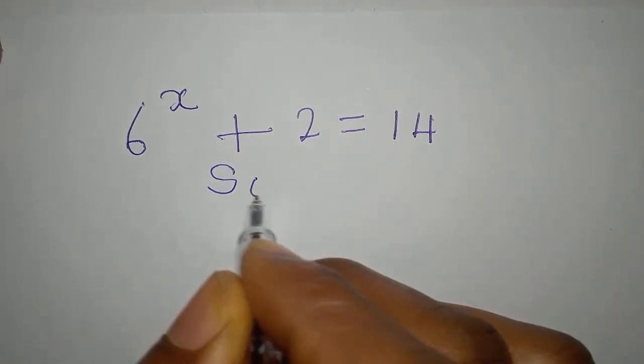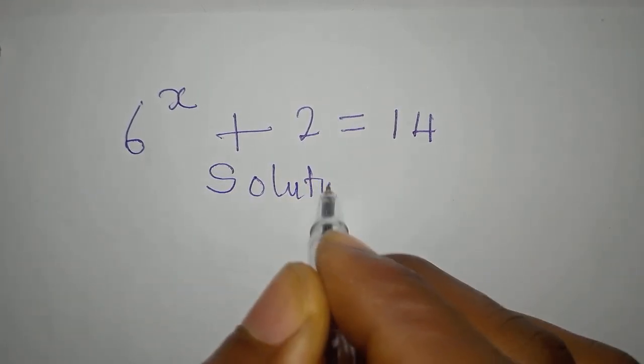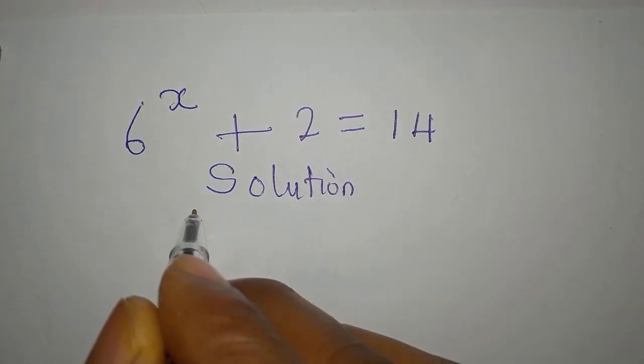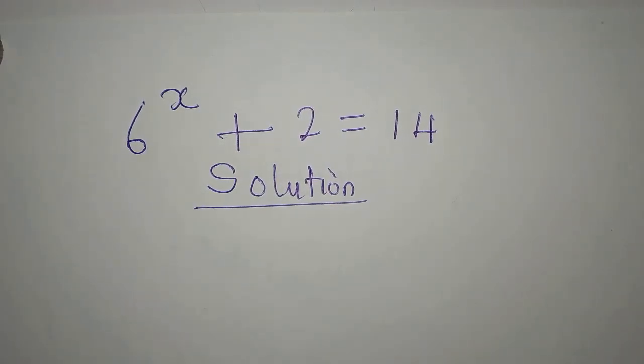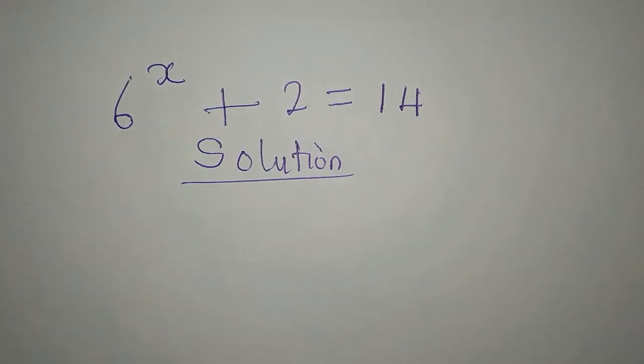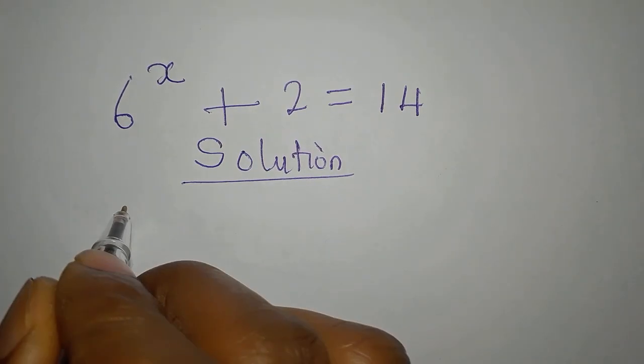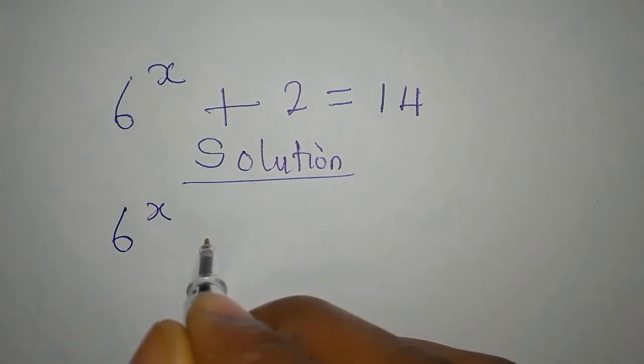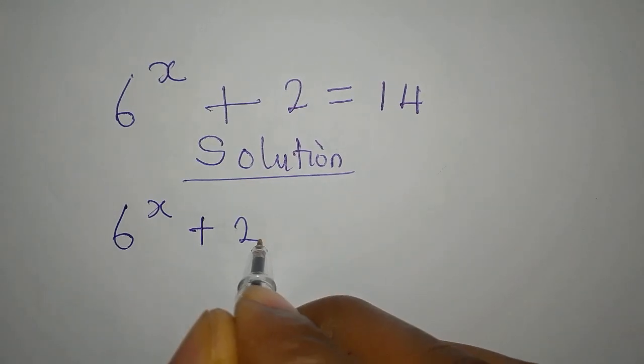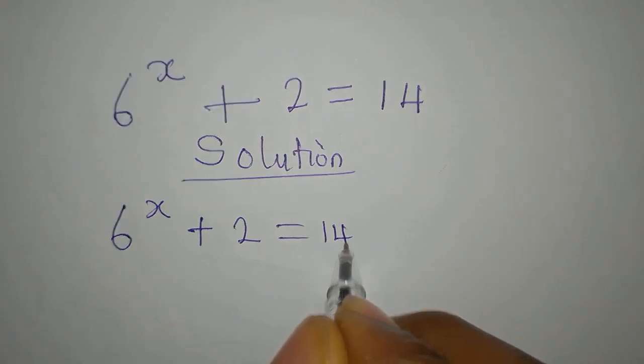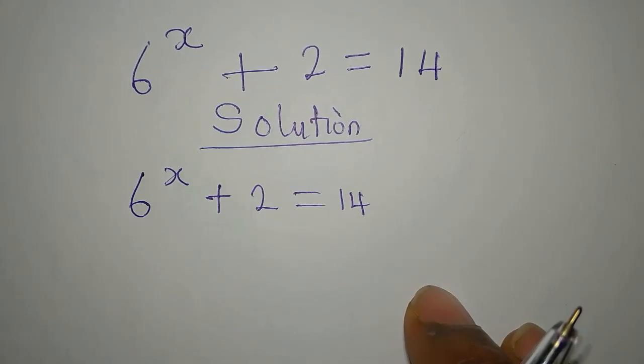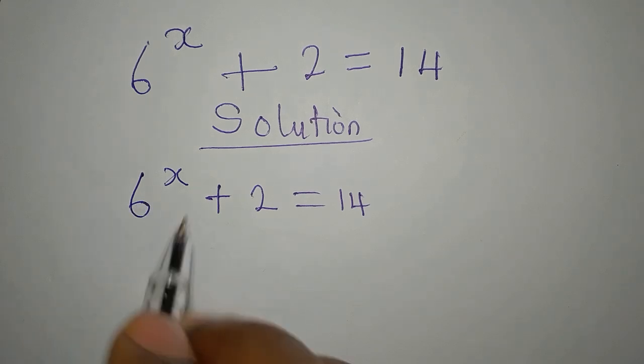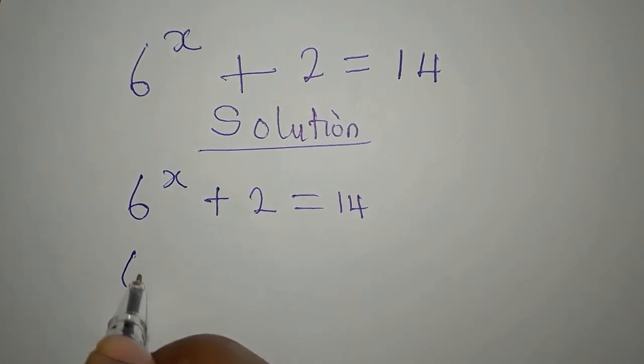Hello everyone, let's provide the solution to this problem. We have 6 to the power of x plus 2 equals 14. Now what I want to do is to make 6 to the power of x the subject.